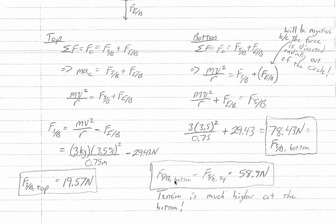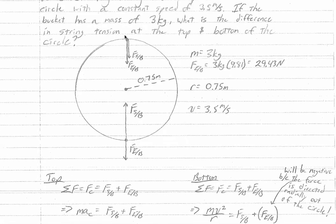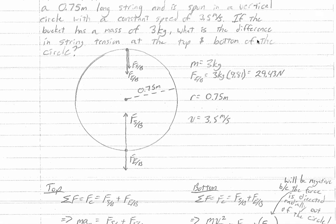This gives us a difference in force between the bottom and top of 58.9 newtons. The tension is much higher at the bottom of the circle, which makes sense. As the bucket moves in a circle, at the bottom the force of gravity pulls the bucket down, so all of the string's force is needed to maintain circular motion. At the top, the force of the earth on the bucket actually helps keep it traveling in uniform circular motion. Hopefully this has been helpful — good luck on future circular motion problems.